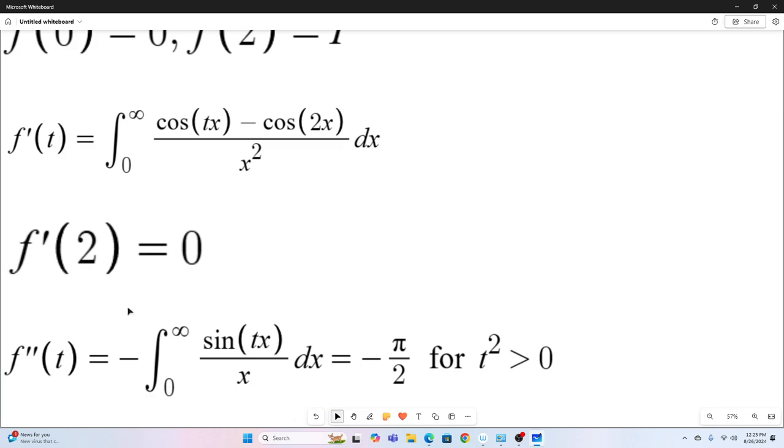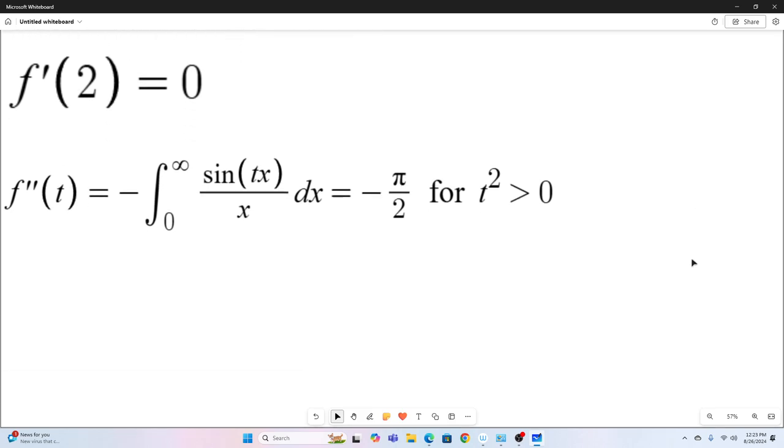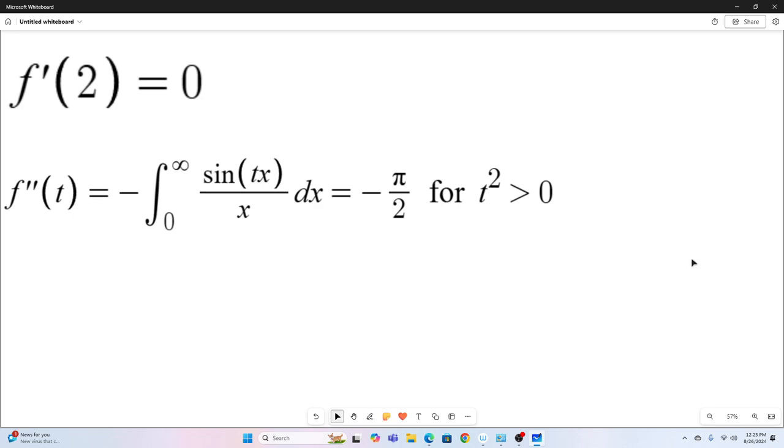So the entire thing goes to negative pi over two. All right, so we've got F double prime of T is just negative pi over two. And of course, we have T not equal to zero. Because if it was zero, it would not equal negative pi over two. It would be zero.